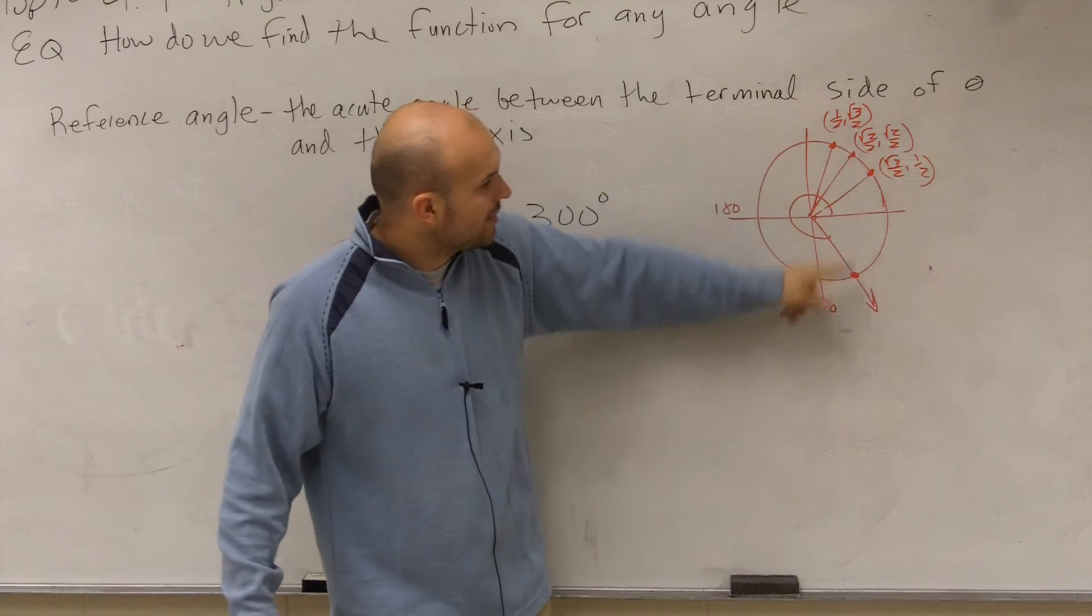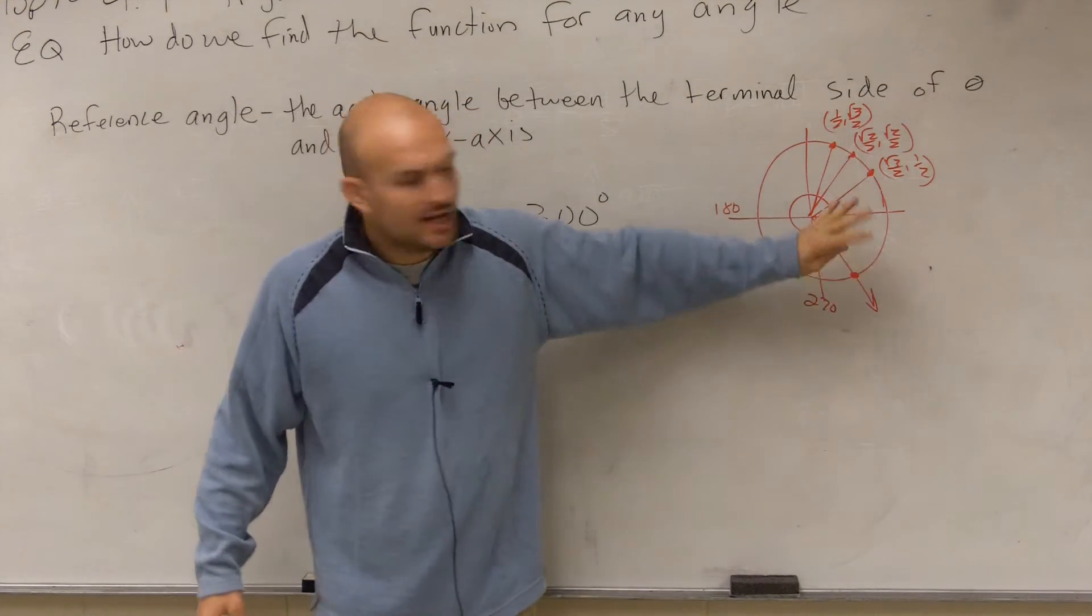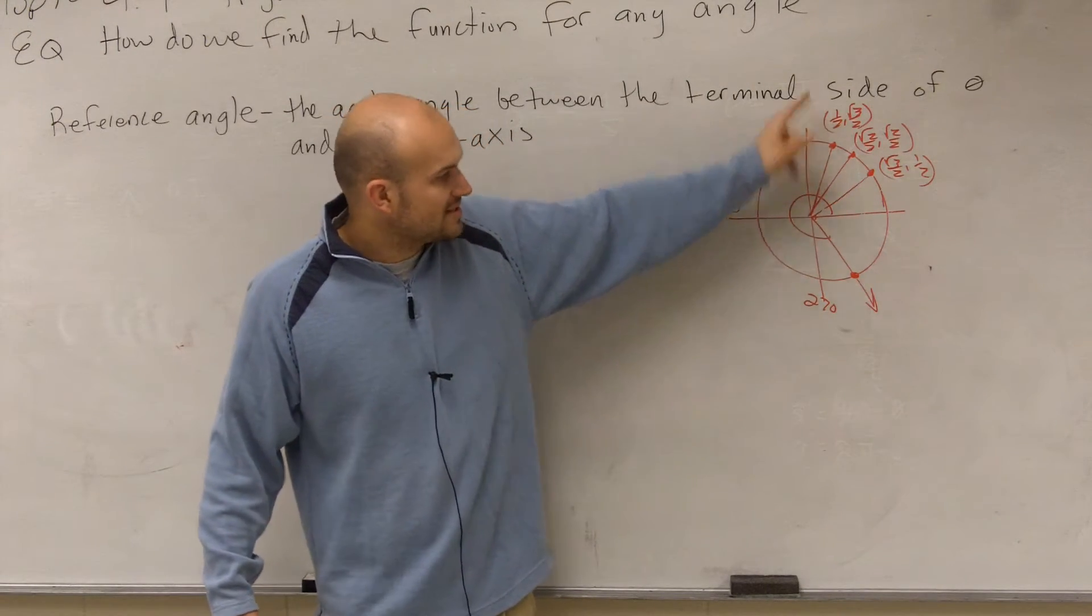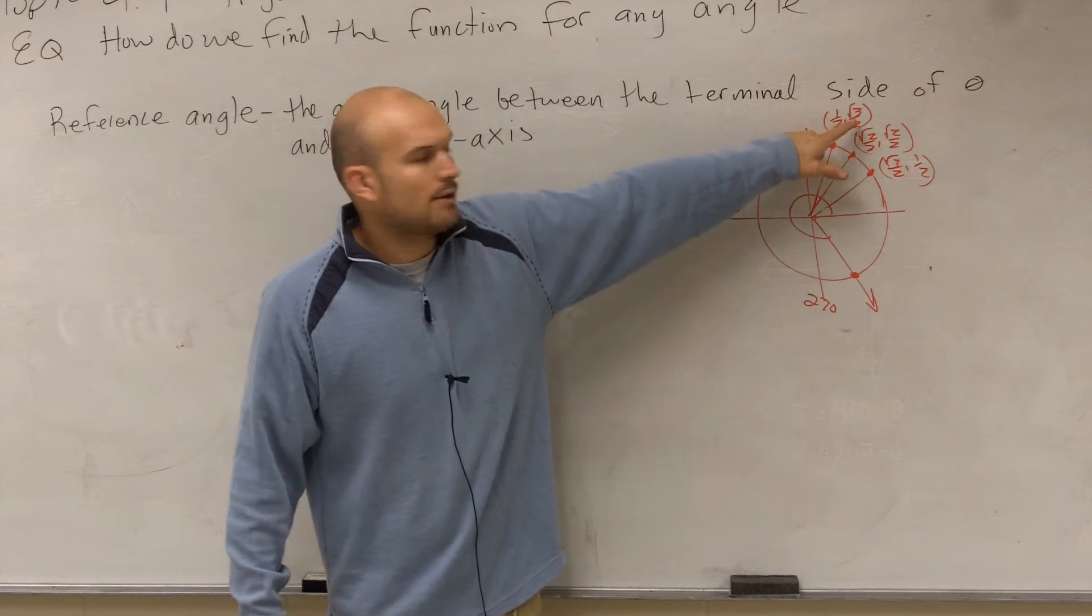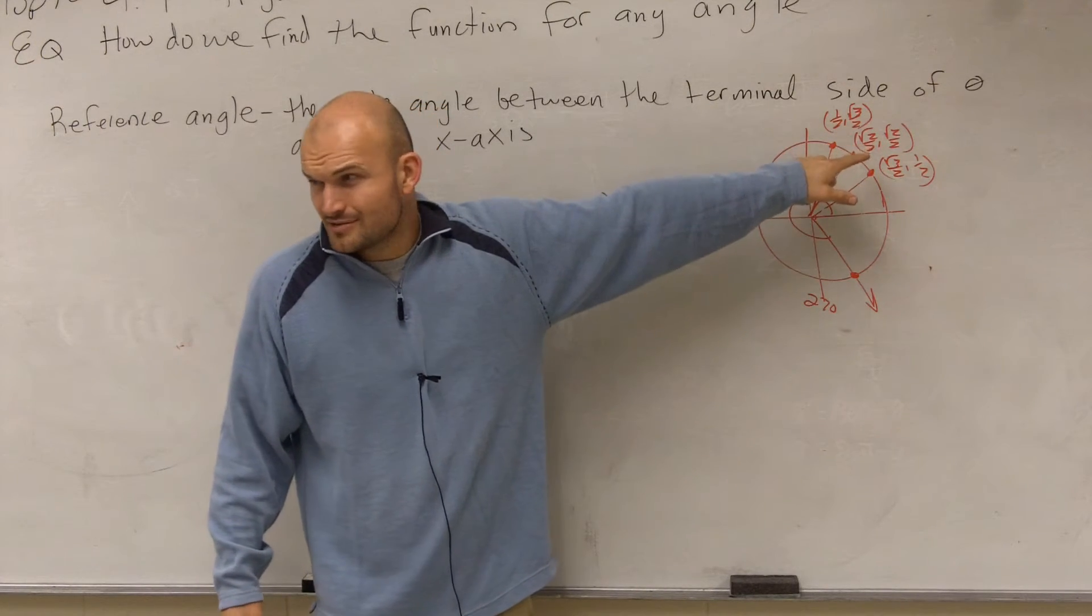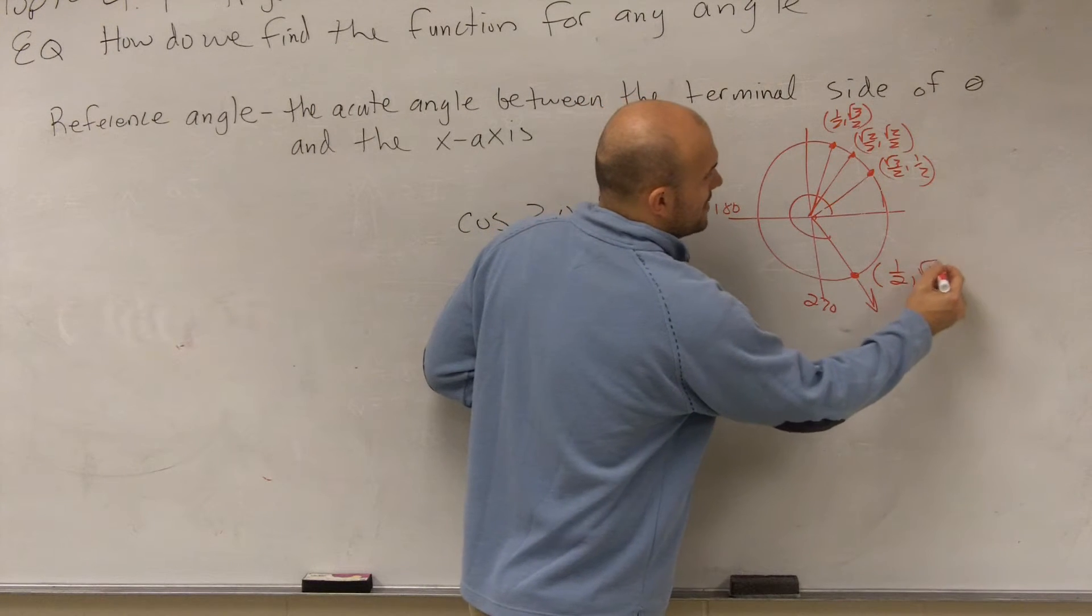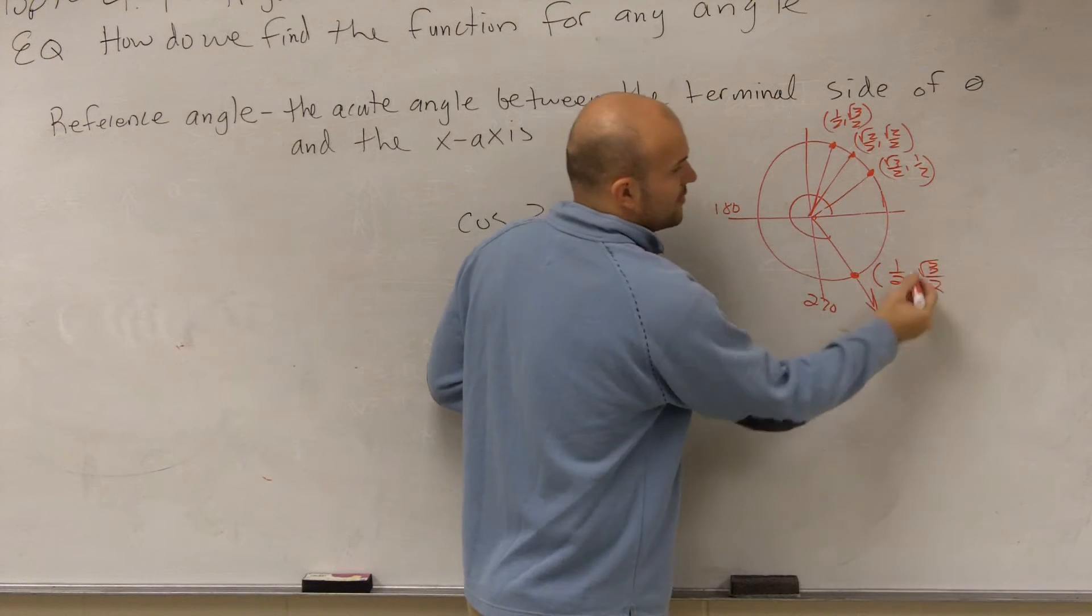Then we looked at it and we said, what is this like a reflection of? And you said, oh, well, this is a reflection of my 60 degree point. But since it's in the fourth quadrant, my y-coordinate's negative. Do you guys remember? And then so you wrote this point was square root of 3 over 2 comma negative 1 half.